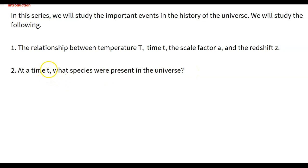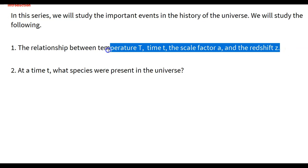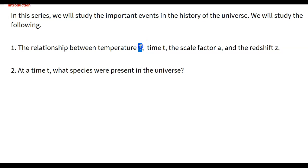Next, once we find temperature T in terms of scale factor, time, or redshift Z, we can say that temperature is also a time variable. So all of these — temperature, time, scale factor, and redshift — are time variables. Once we know one variable, we can find the others. So at a given temperature T, we want to know what species were present in the universe.